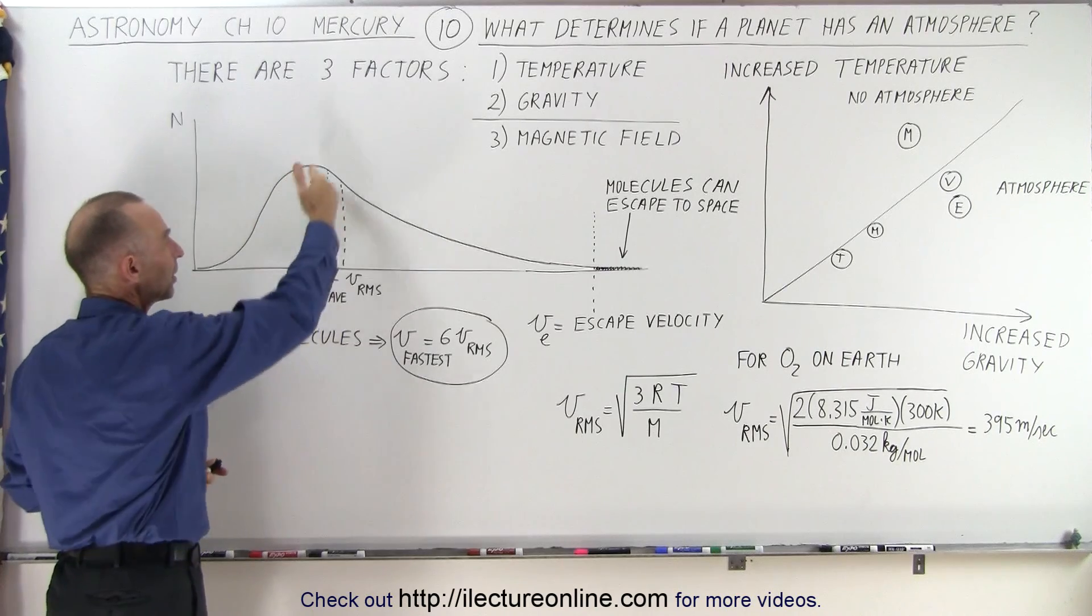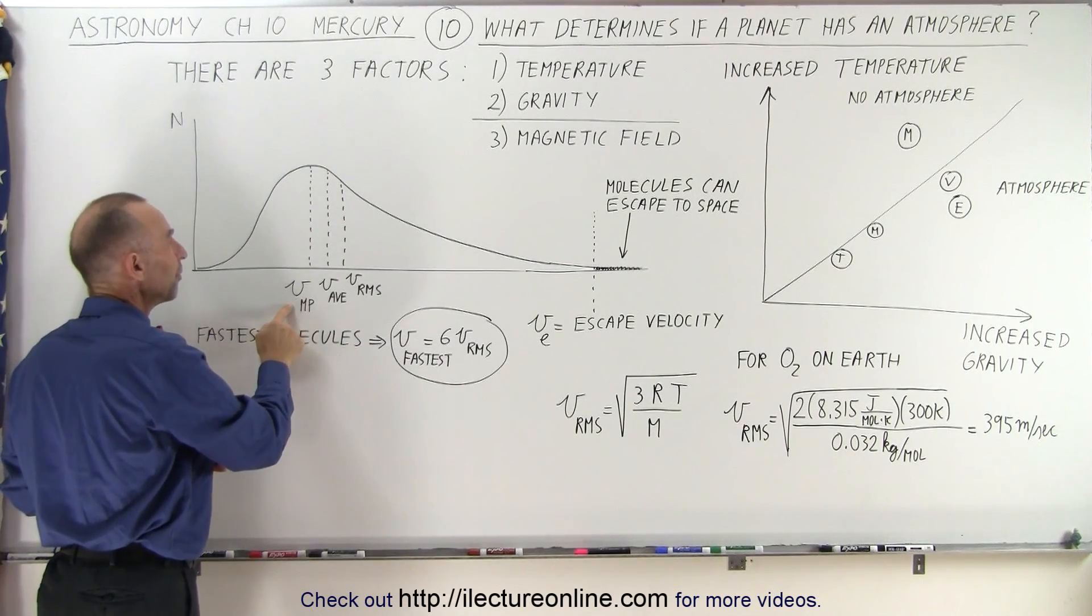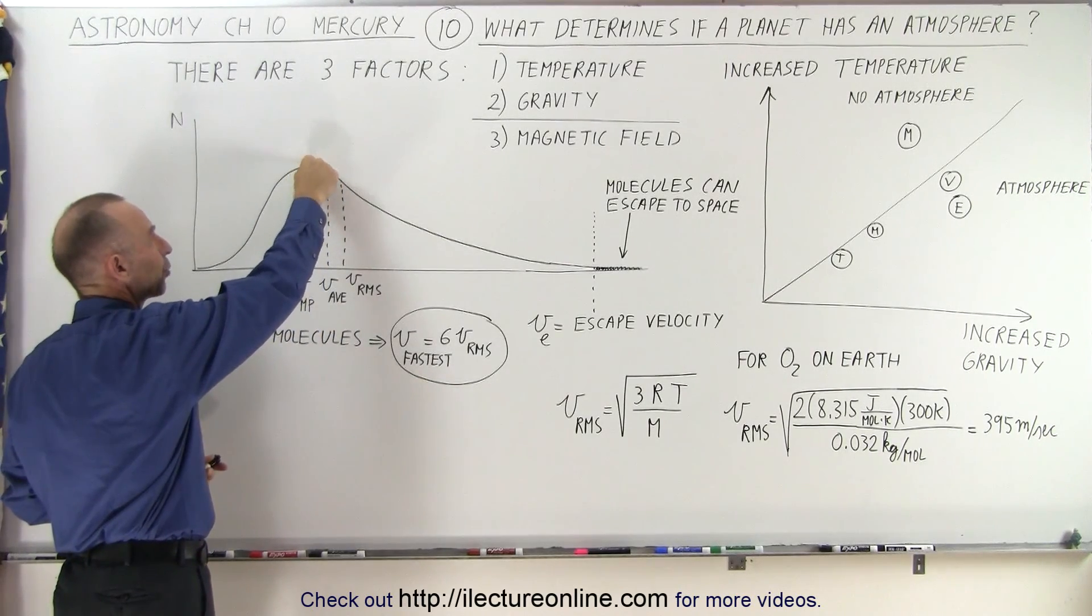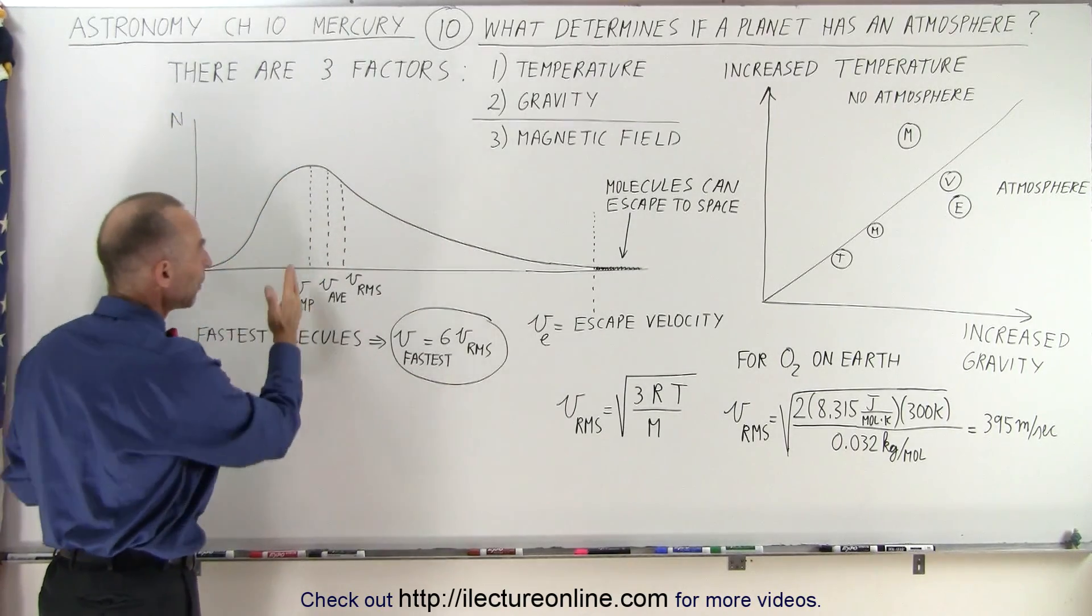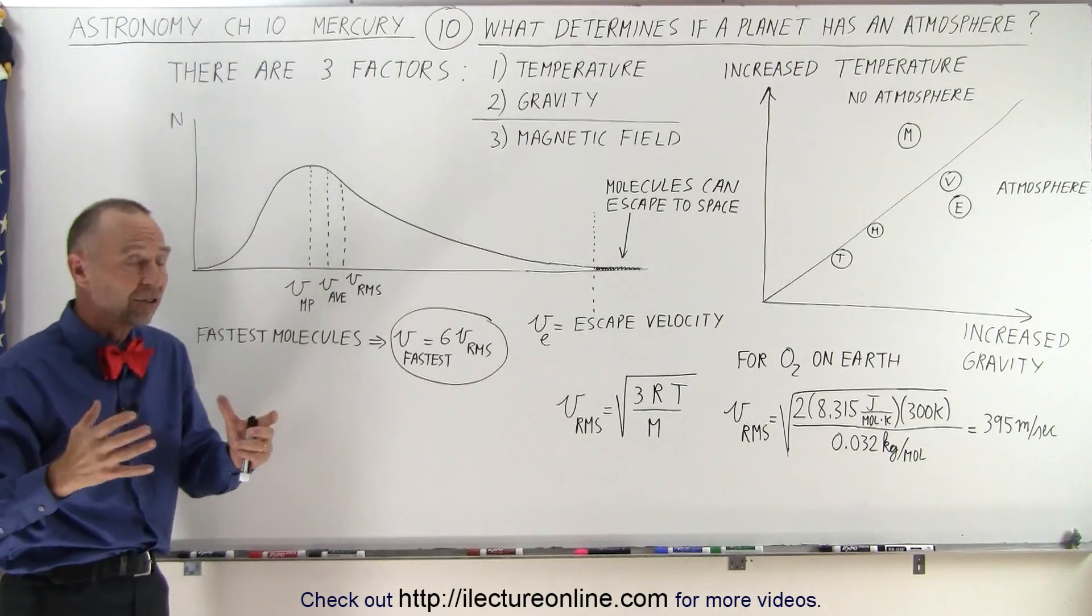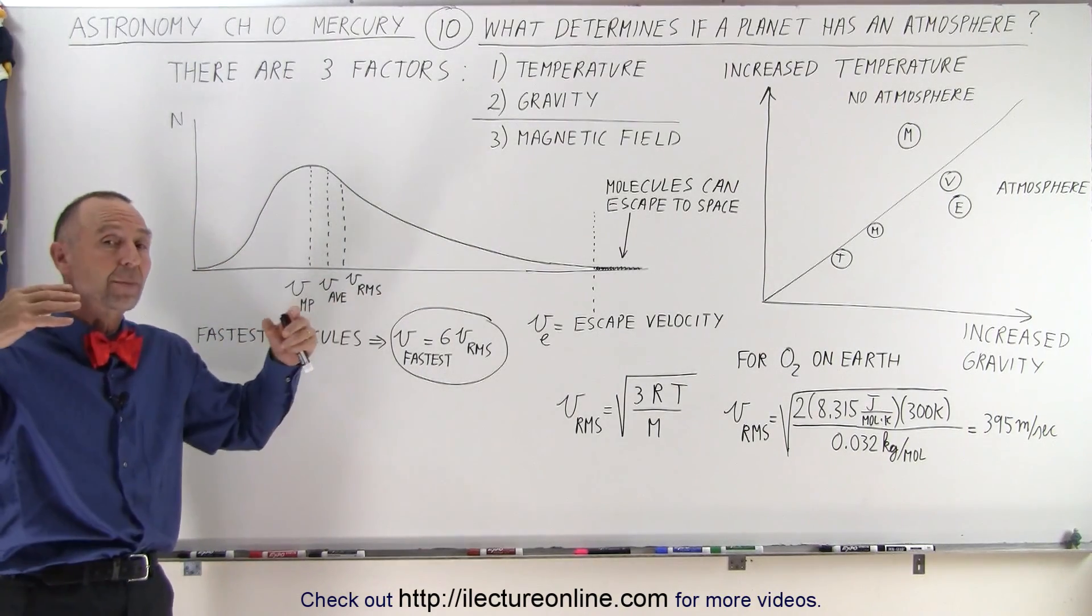and the three main velocities we typically deal with is the most probable velocity, the velocity that occurs with the most molecules, so n represents the number of molecules with that velocity.